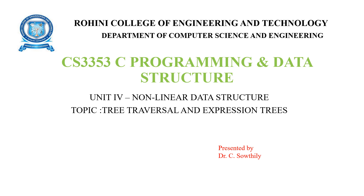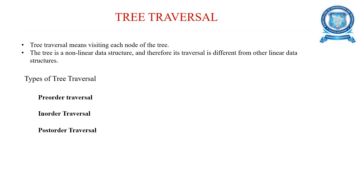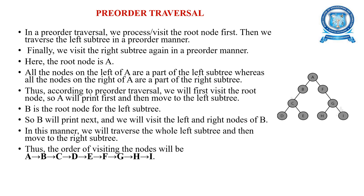We will discuss tree traversal and expression trees. Tree traversal means visiting each node of the tree. It is a non-linear data structure in which the traversal is different from other linear data structures. There are three types: pre-order, in-order, and post-order traversal.